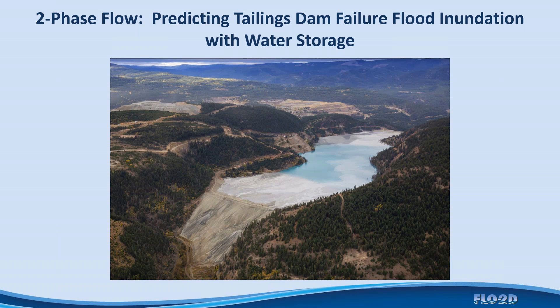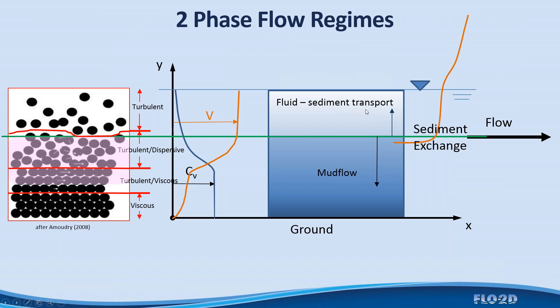A two-phase flow component enables prediction of tailings dam flood inundation when water is sitting on top of the tailings. The simulation models a fluid phase and a mudflow phase, where the fluid phase rides over the mudflow. As flow is released from the tailings dam, exchange occurs between the fluid phase and the mudflow. If the fluid phase races ahead, it can scour the channel bed. The fluid can drop sediment to the mudflow, scour sediment off the mudflow, or if highly concentrated, the fluid can become part of the mudflow; likewise, the mudflow can be diluted into the fluid flow.